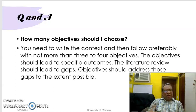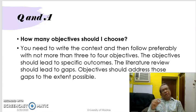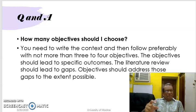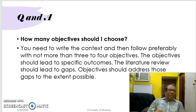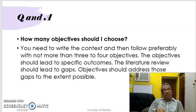If you have a large number of objectives, you will lose focus. On the other hand, if you have only one very short objective, it may become a paper for publication rather than a research project for which you require funding.